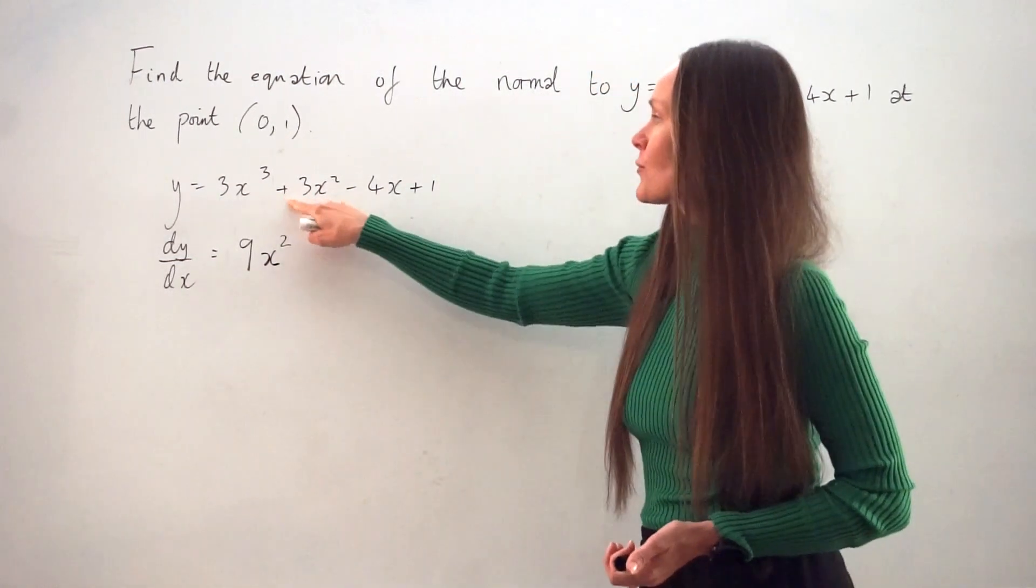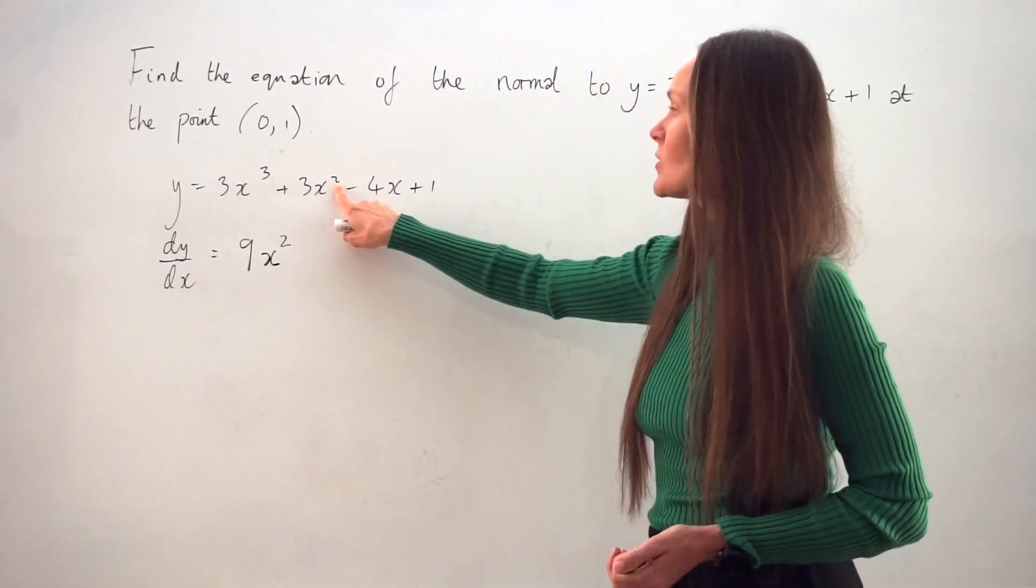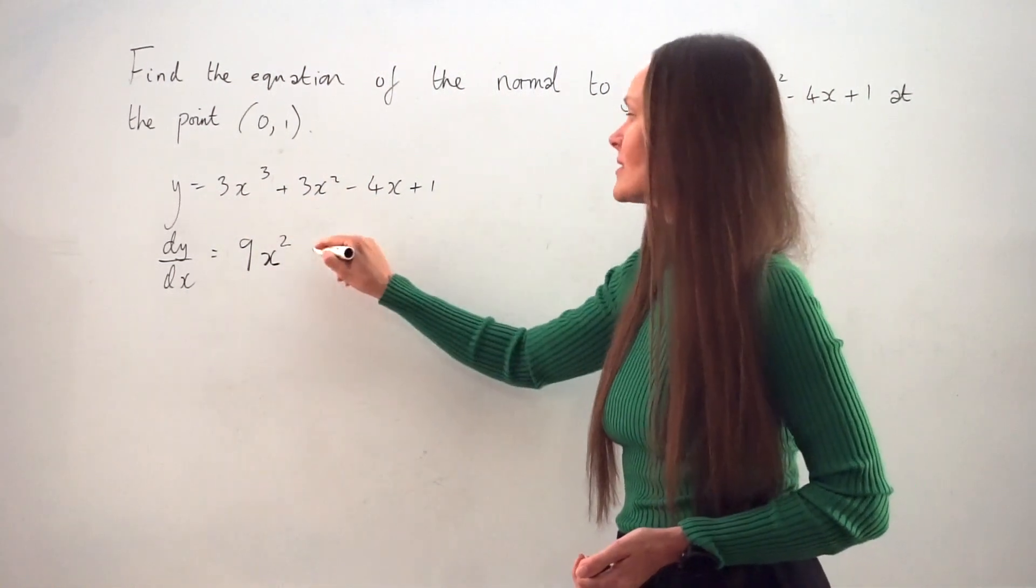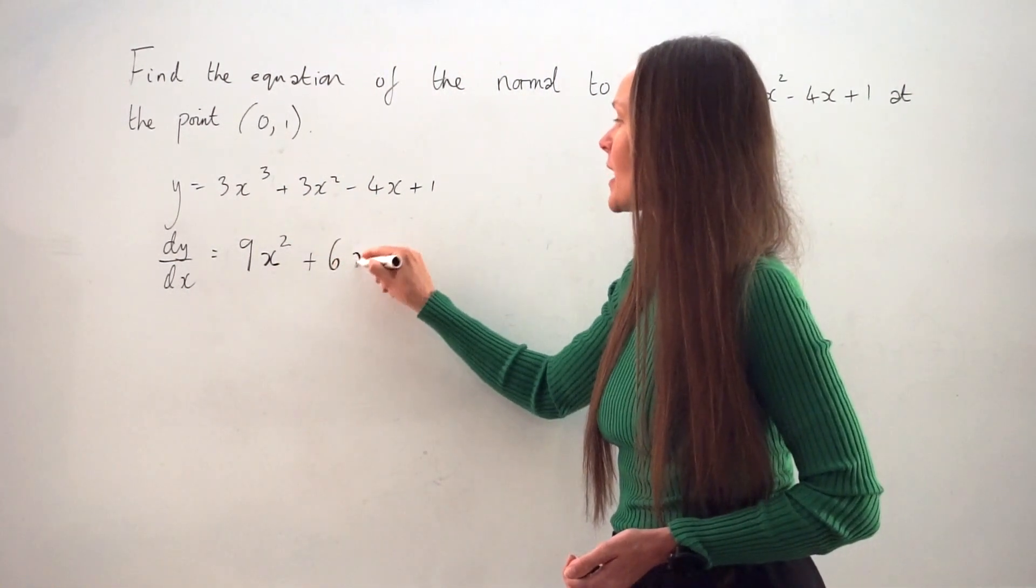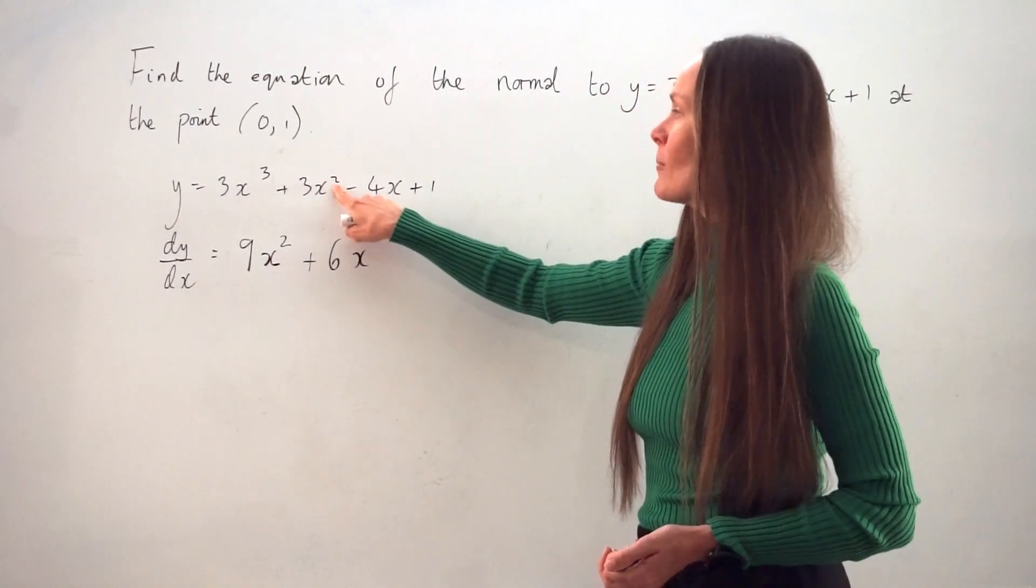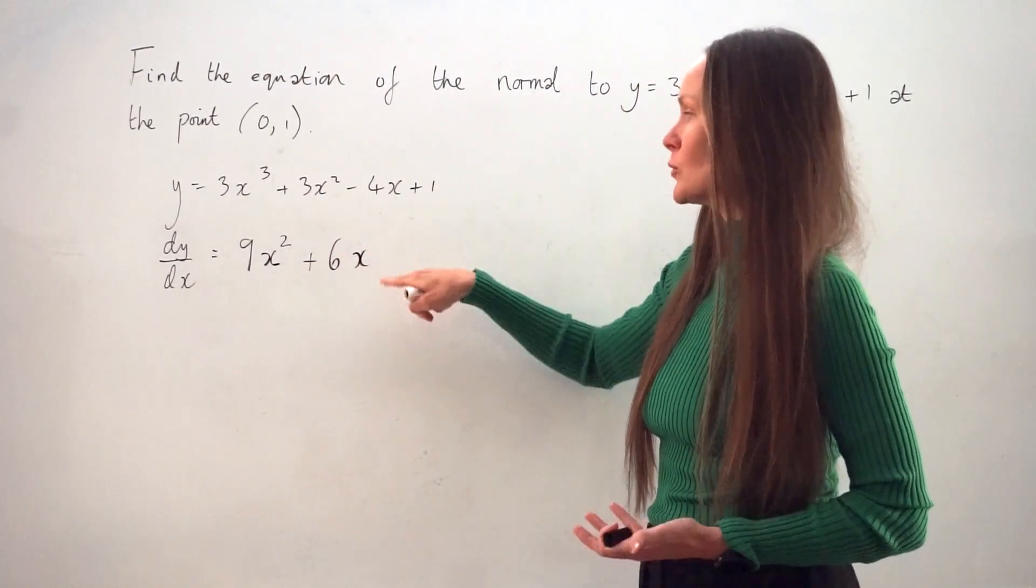Then if I differentiate the next term, I take this power, so 2 multiplied by 3, which is 6. And again, the power decreases by 1. So I'm left with x to the power of 1, or you can just write x.